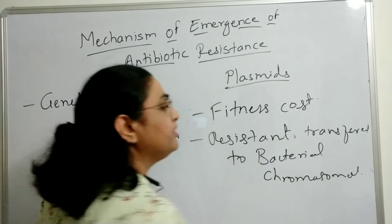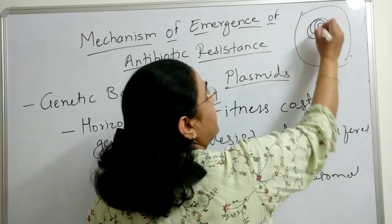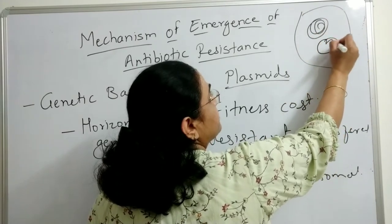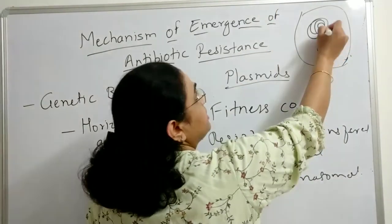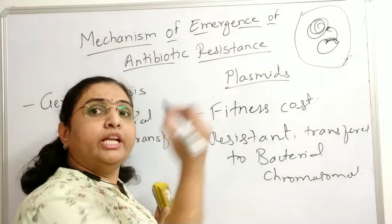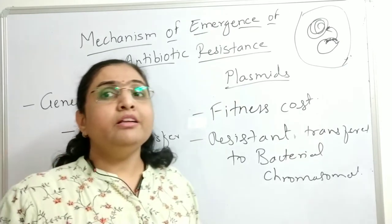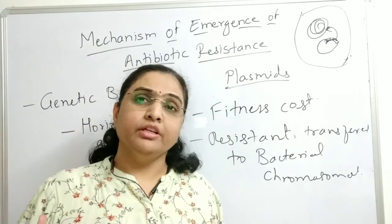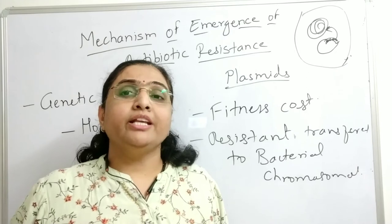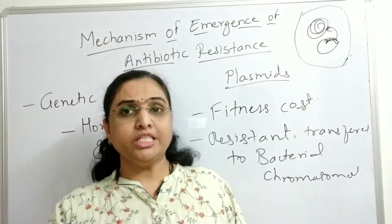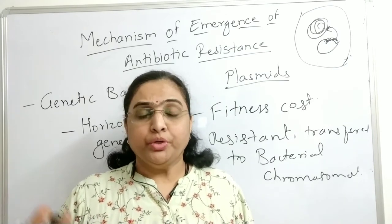Here, suppose this is the bacterial chromosome and here is a plasmid bearing the antibiotic resistance gene. This antibiotic resistance gene is transferred to the chromosomal DNA and the plasmid is eliminated from the bacterial cell. The bacterial cell retains the antibiotic resistance gene, and as the cell grows, the progeny inherits the antibiotic resistance gene — maintaining it within the bacterial population.